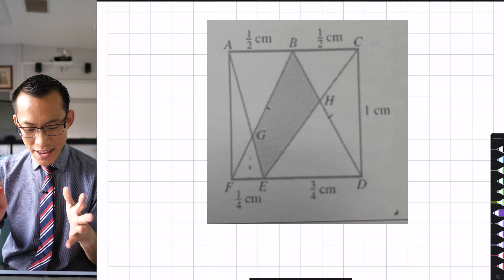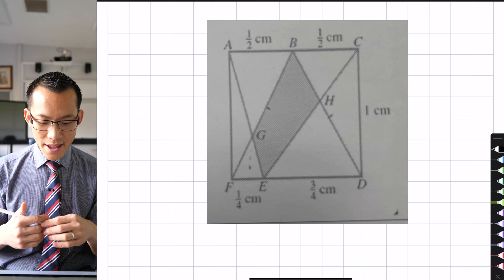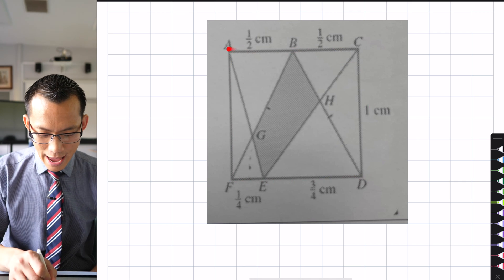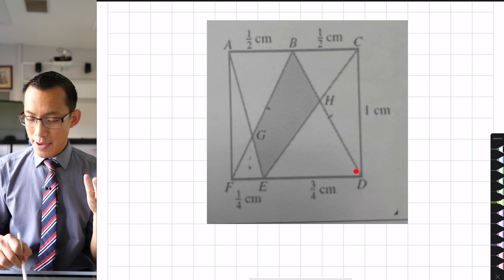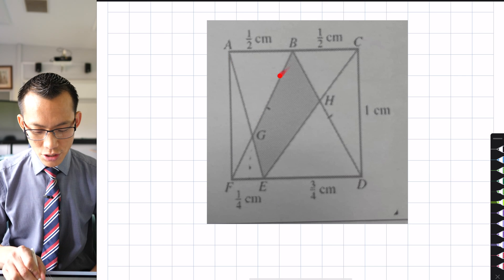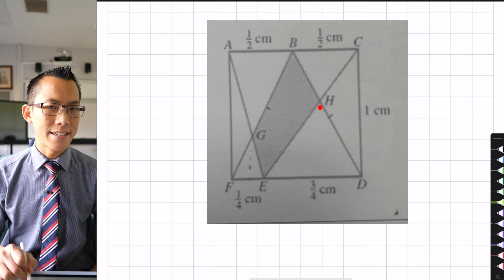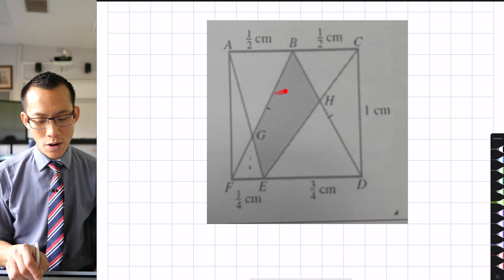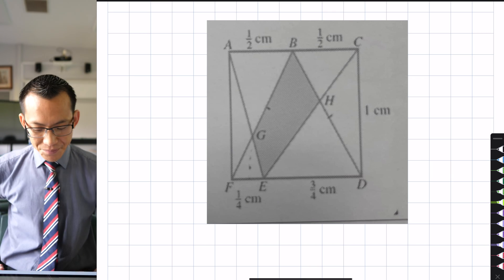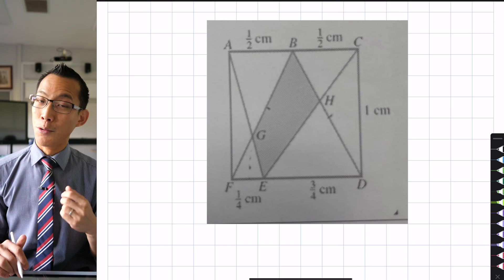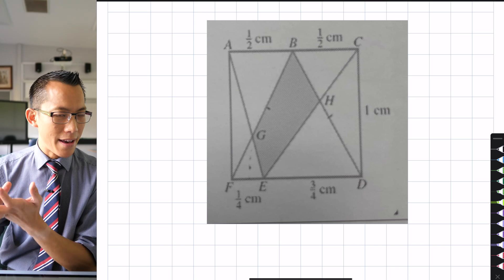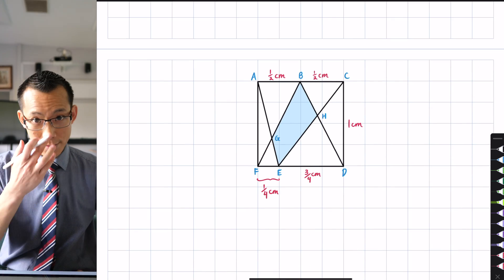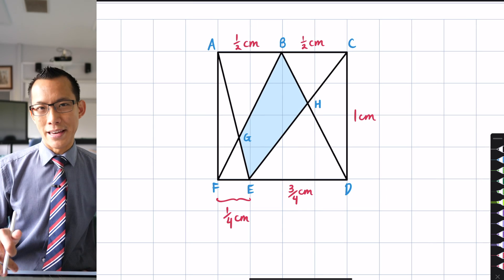Here's the problem. We have a square ACDF with dimensions one centimeter by one centimeter, and a shaded region BGEH inside it. As you might guess, the question is: what is the area of BGEH — the shaded region? I decided to redraw the diagram because the original was a blurry picture. It's not a bad diagram, but I wanted a clearer version I could draw on top of more easily.